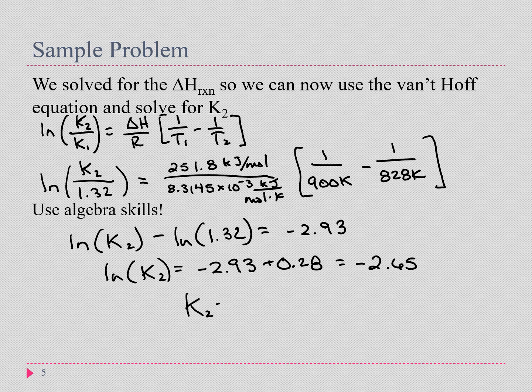So K2 is e to the negative 2.65, which is 0.07. We have solved for our K2. We can also then think, does this make sense? When we change the temperature, should we have decreased our equilibrium constant? The answer is yes, so that's a good checkpoint that this is probably the correct answer.